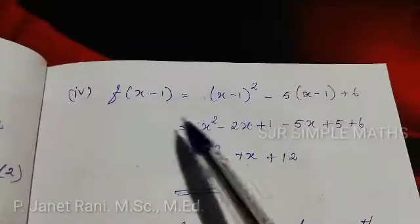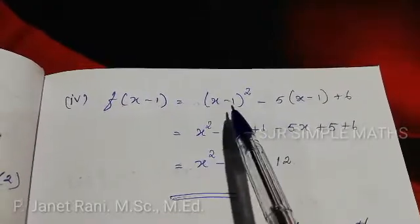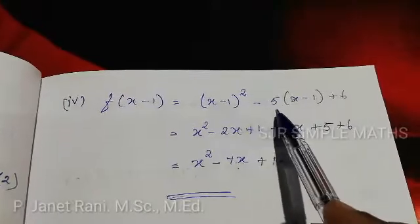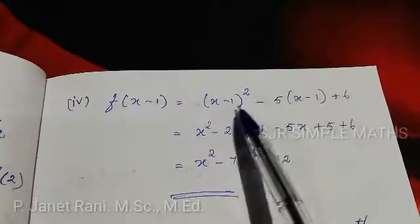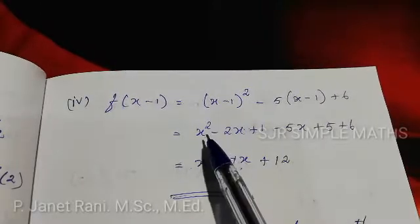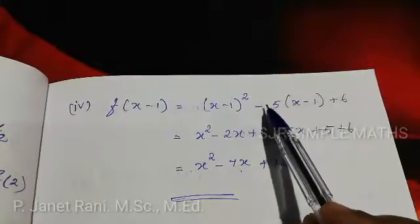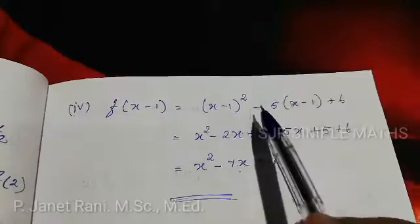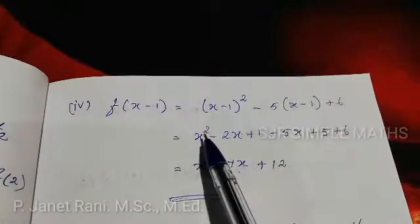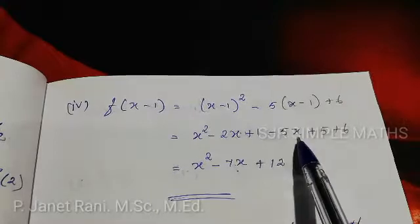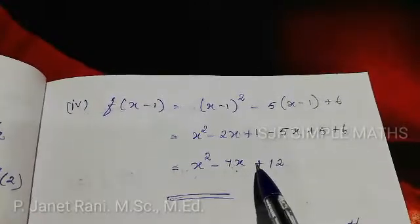Fourth: f(x-1). Substitute x = x-1. f(x-1) = (x-1)² - 5(x-1) + 6. Using (a-b)² = a² - 2ab + b²: x² - 2x + 1 - 5x + 5 + 6. Combining x terms: -2x - 5x = -7x. So f(x-1) = x² - 7x + 12.